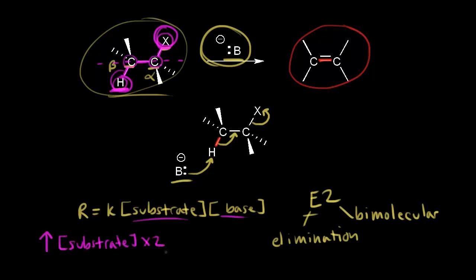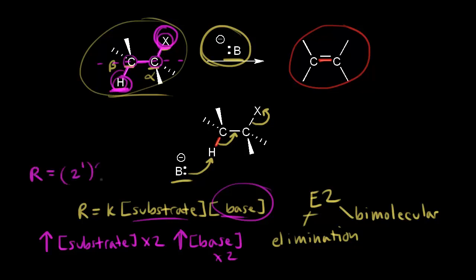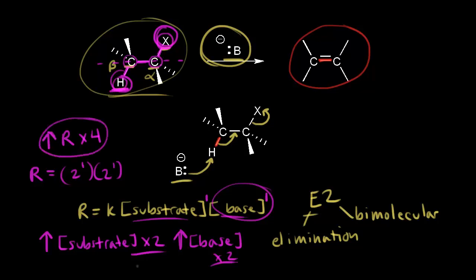Let's say you also increase the concentration of your base by a factor of two. What happens to the overall rate of the reaction? The rate would be equal to two to the first times two to the first, because both concentrations are to the first power and we're doubling each. Two times two is four, so we're going to increase the rate by a factor of four if you double the concentration of both.